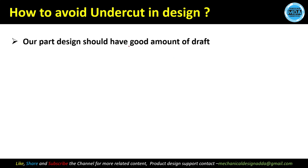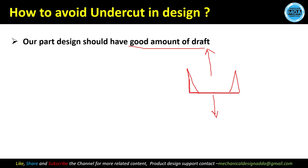To avoid undercuts, the part should have a good amount of draft. We need to add draft to the vertical surfaces. This is my first mold movement and this is my second mold movement. Surfaces parallel to the pulling direction need to be drafted. The draft angle depends on the height of the surface — if the height is large, you can provide a smaller draft angle.